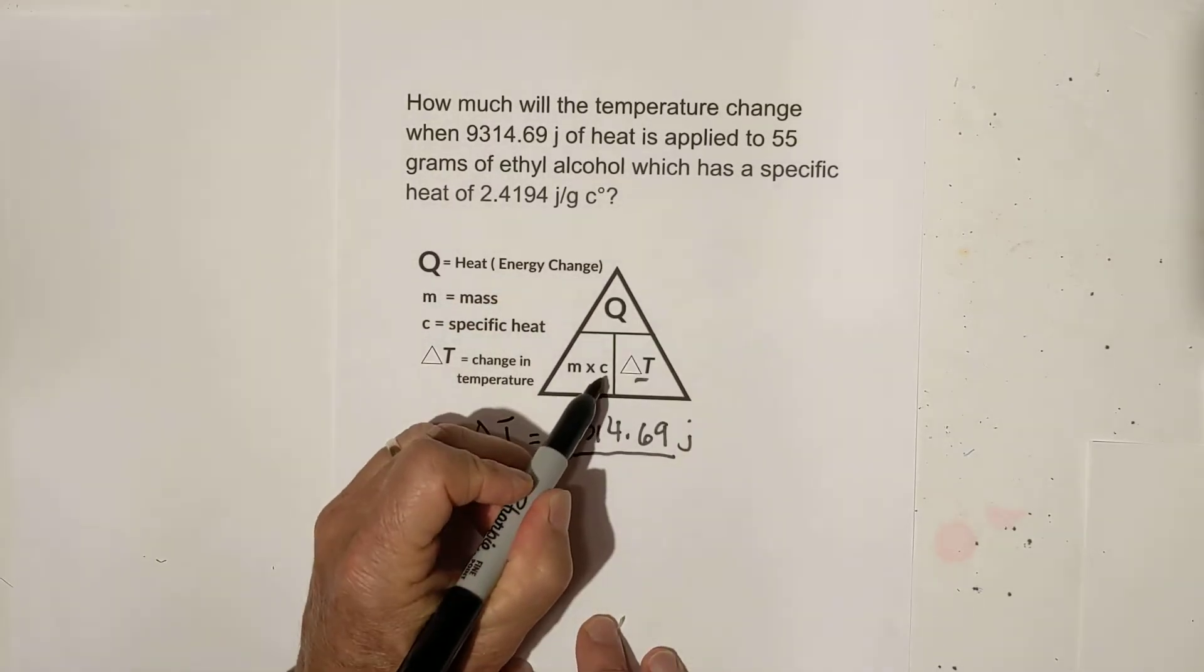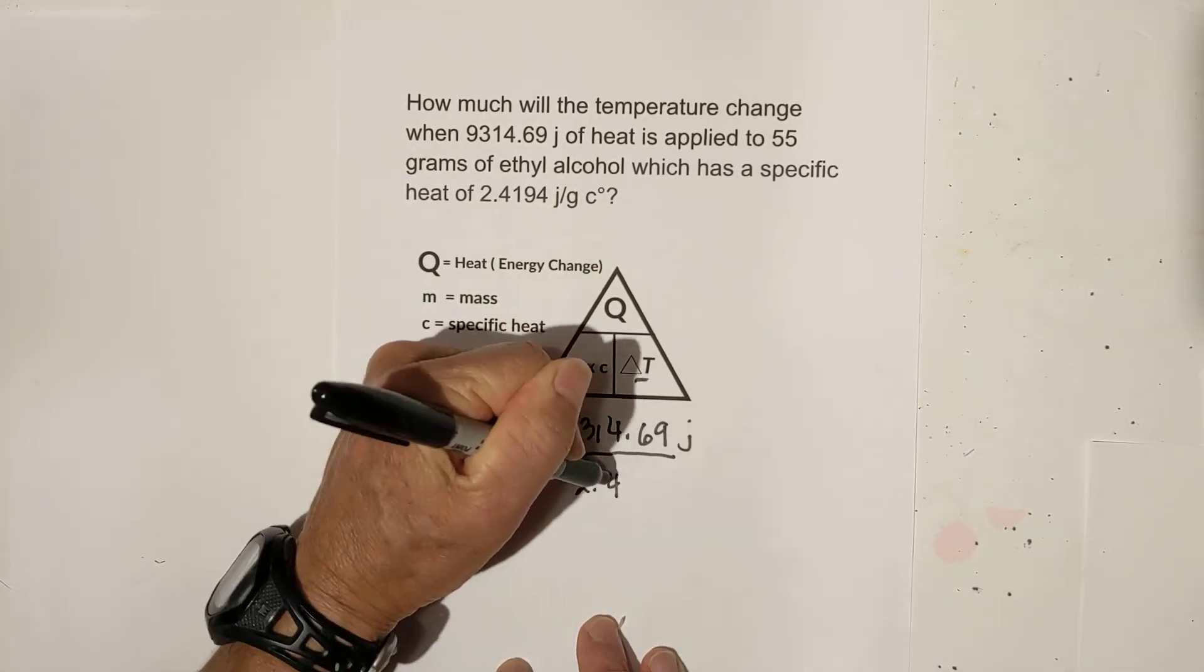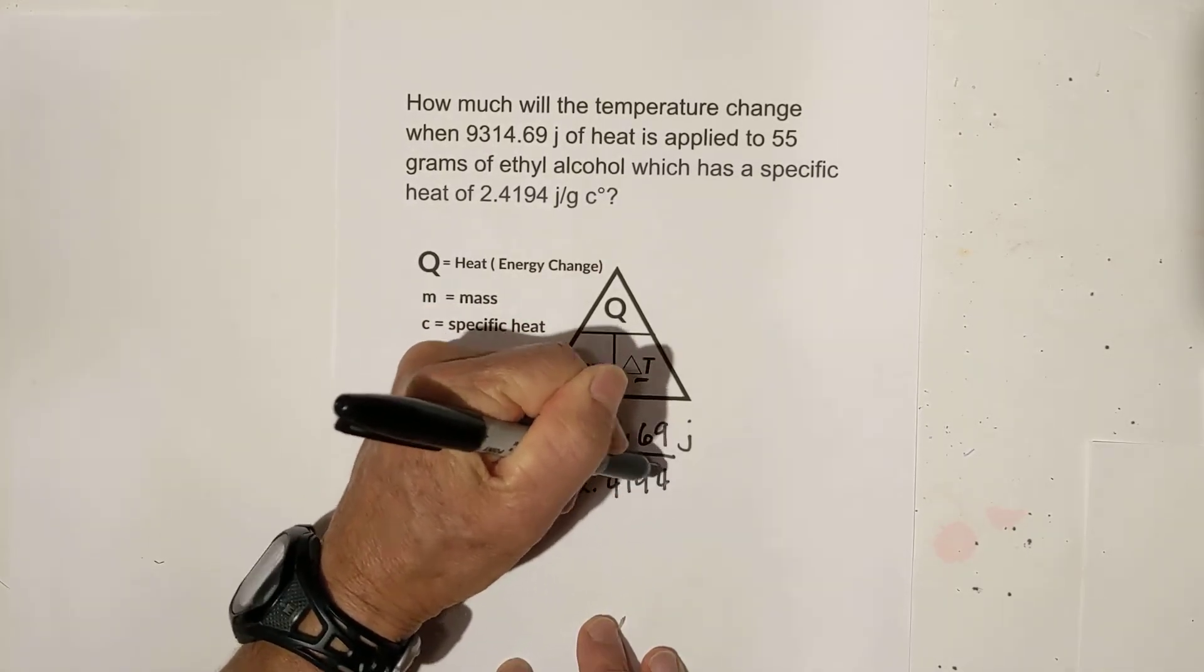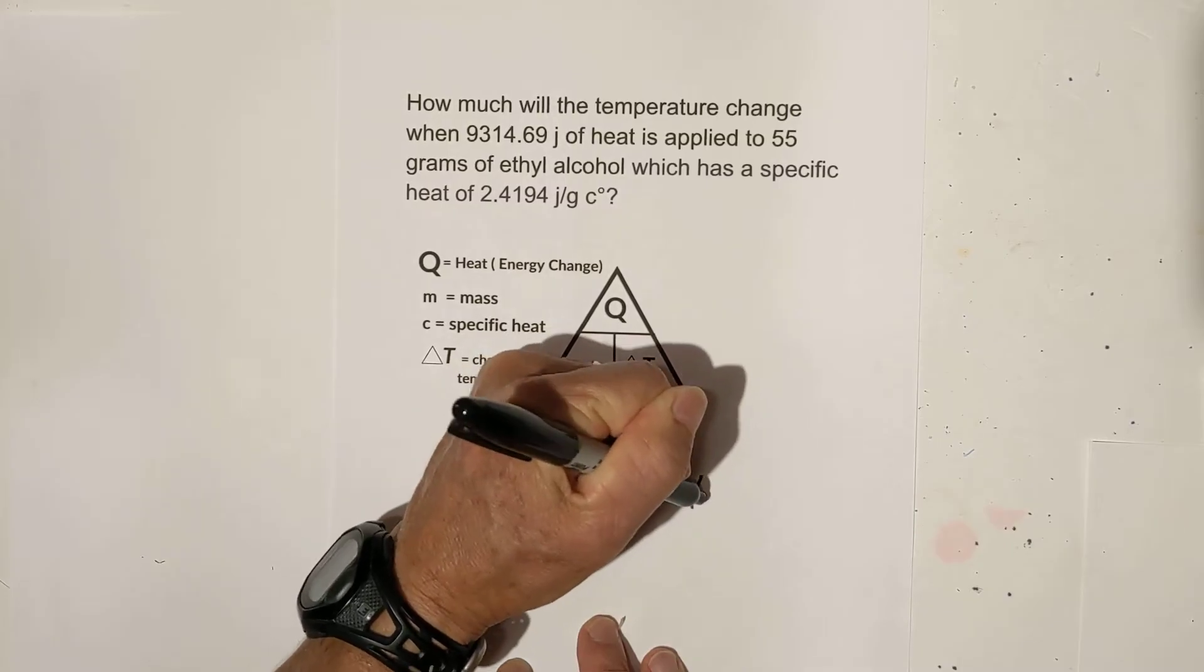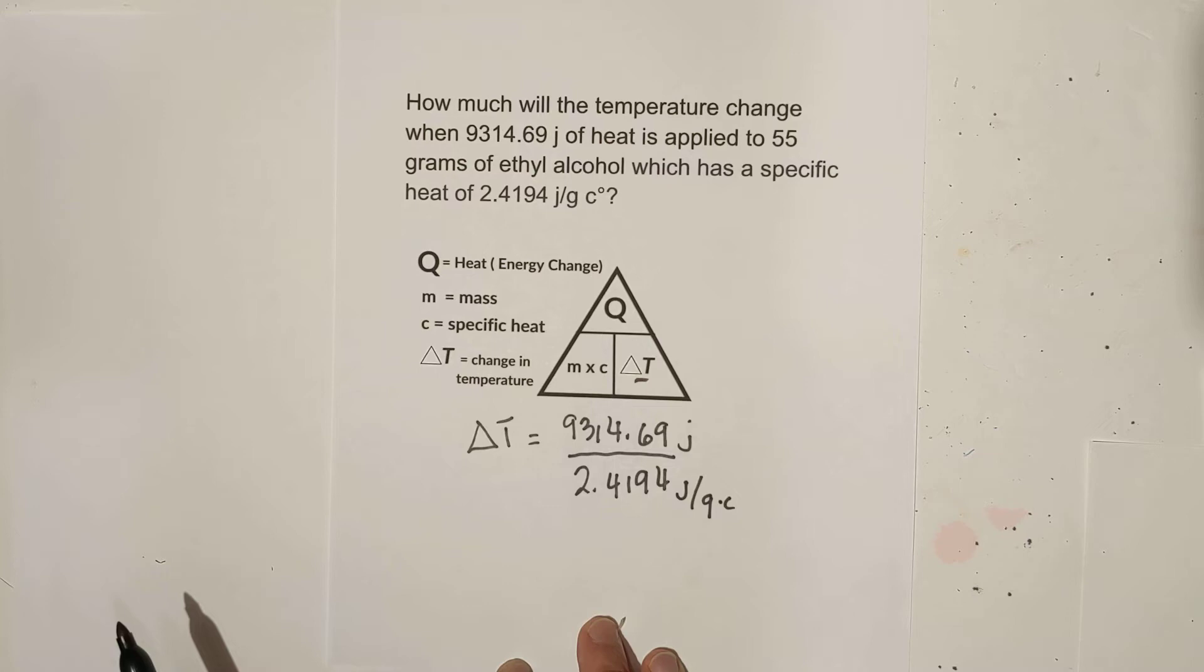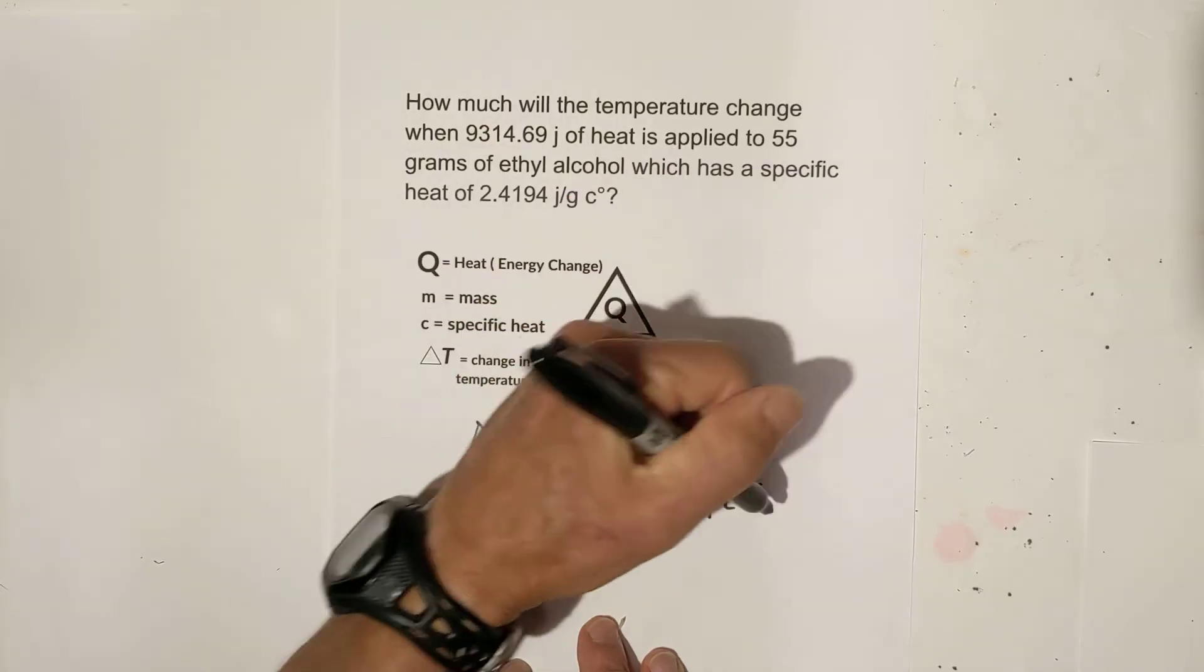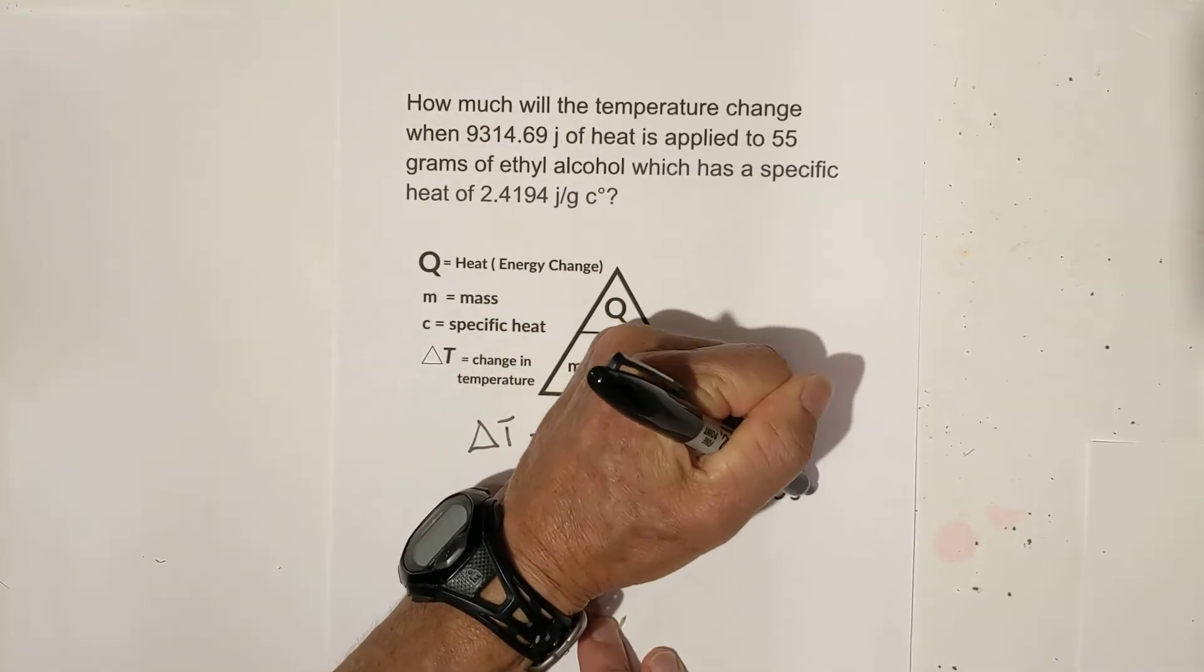And then we're looking for the specific heat and that is right here, 2.4194 joules per gram Celsius. And then it looks like we need the mass and the mass is 55 grams.